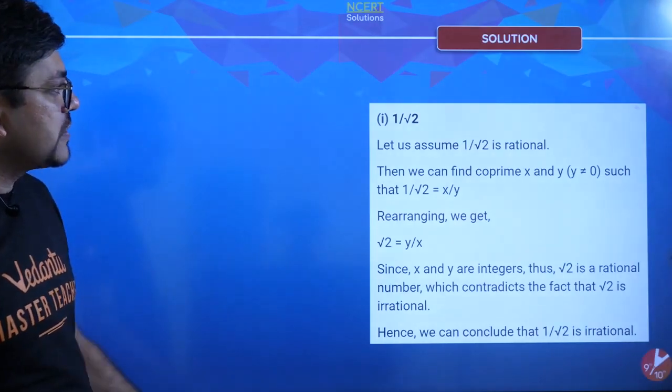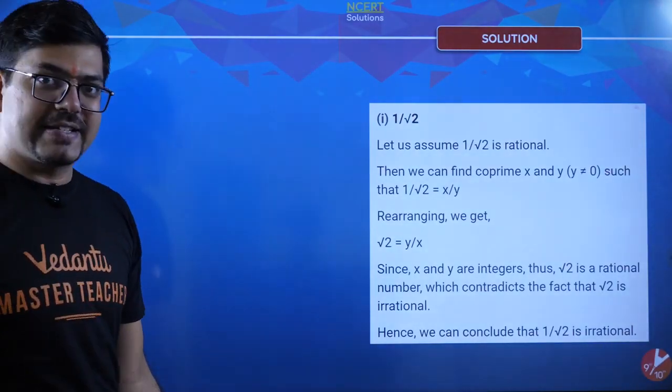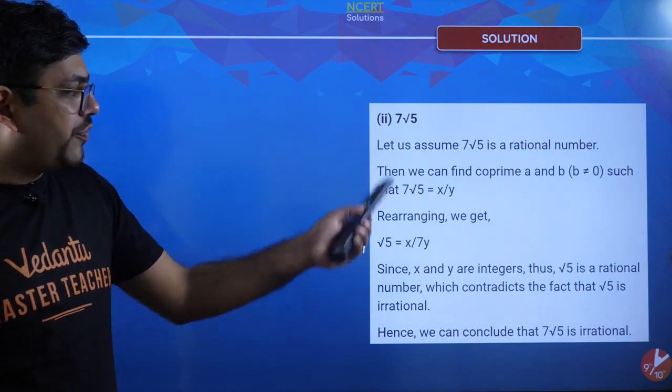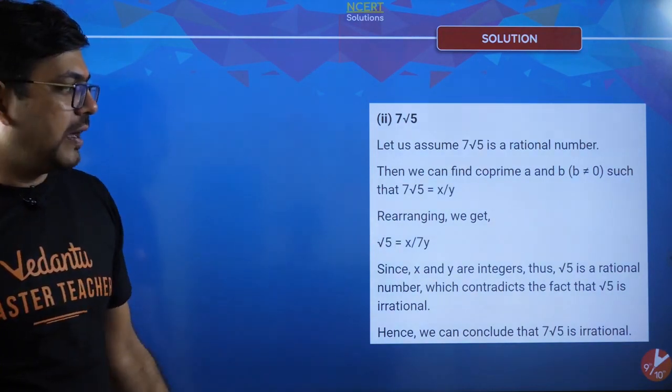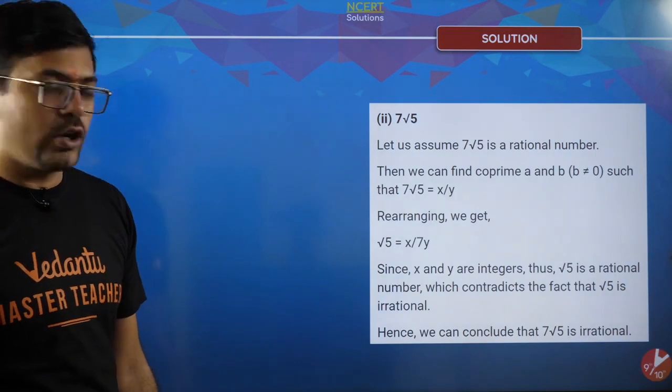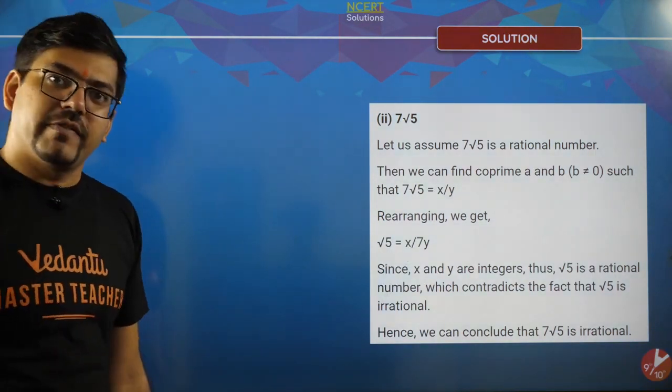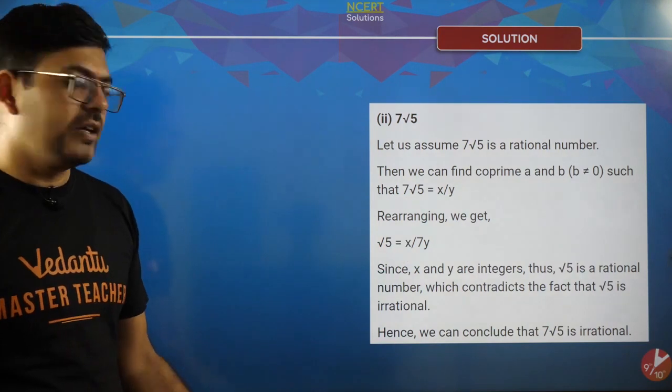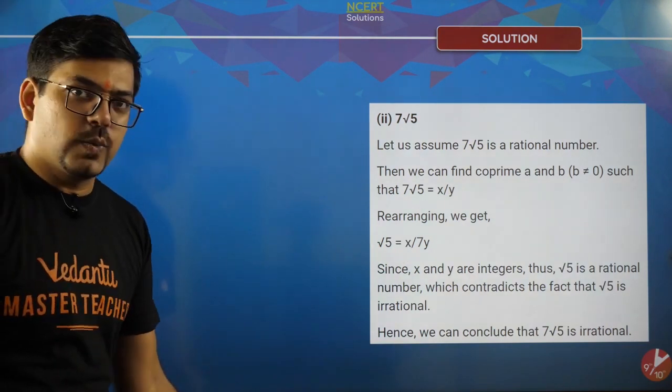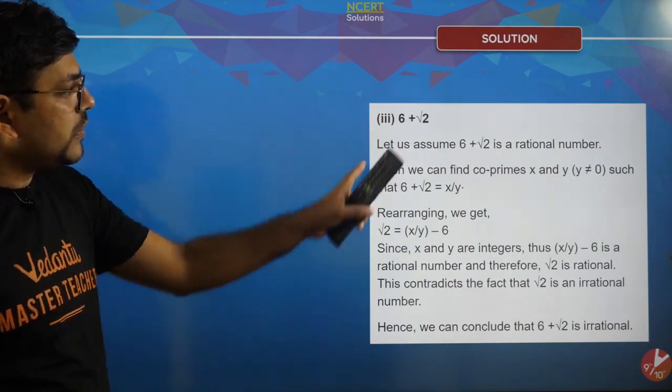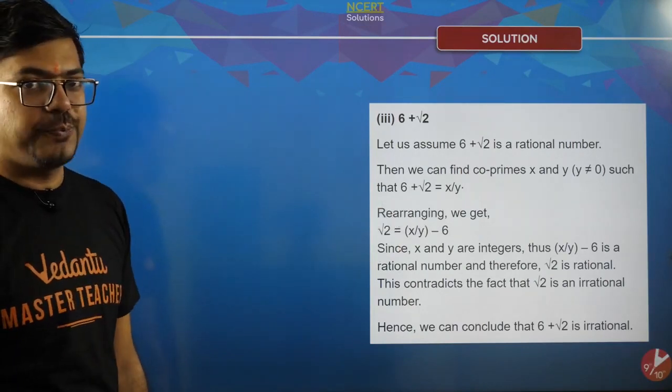So the solution as well—the same way, exactly the same as what we did. 7 root 5, the same thing: root 5 equals 7x by y, then 7 going to the denominator, x upon 7y. X and y are integers, so x by 7y will be a rational number, and we know that this is irrational so it can't be equal. Our assumption was wrong. The same way we did here as well.